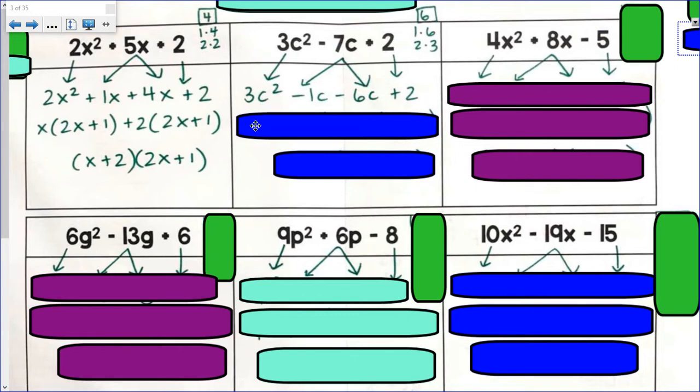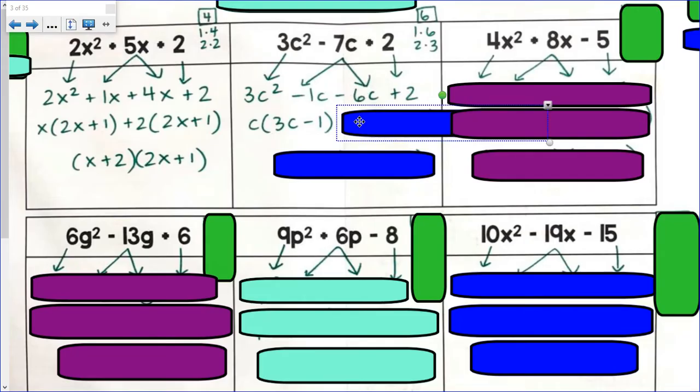GCF of my first two terms here is c. c times 3c is 3c². c times negative 1 is negative 1c. Something we have to make sure we do whenever we have a binomial and it starts with a negative. That means we factor out a negative.